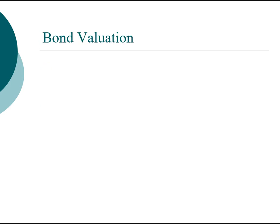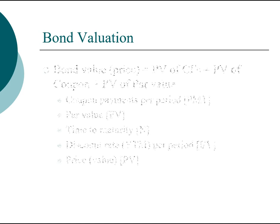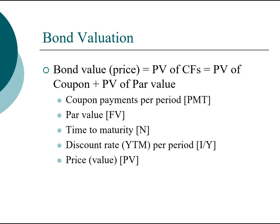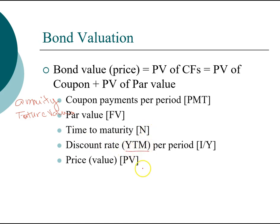Now let's look at an example of how to compute bond valuation. Here is a summary worth writing down. The coupon payment is the annuity cash flow you receive from buying the bond. The par value is the money you receive at the end of the investment — the future value. The time to maturity depends on the bond. The discount rate we use is always the yield to maturity. The price of the bond is the present value.